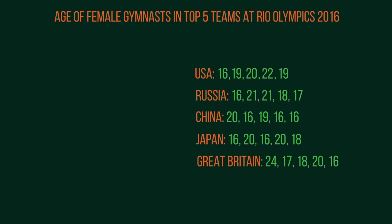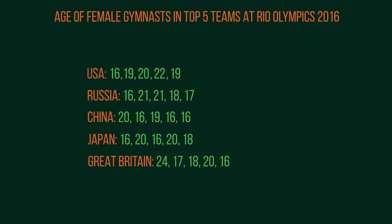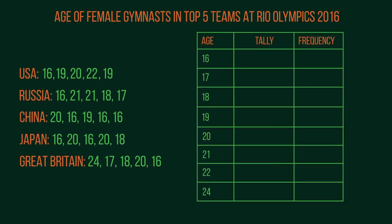So we have these ages. We can collect them into a frequency table by tallying 16, 19, 20, 22, 19, and carrying on for all the data. Then add up your tally marks to get the frequency, and we have a completed frequency table which is much easier to work from.